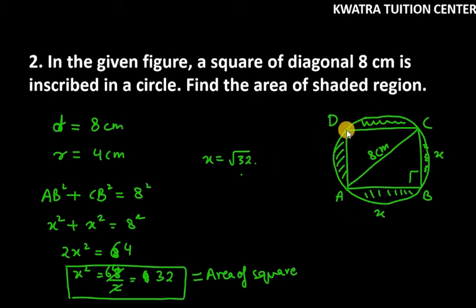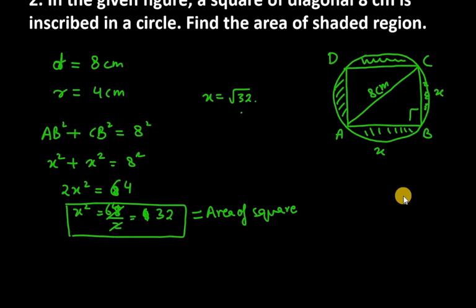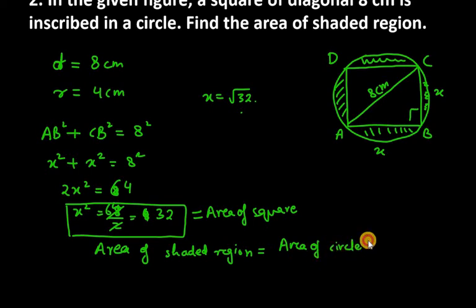Now we have to find area of shaded region. So what you need to do is find area of circle minus area of square. Let's find this. We have area of shaded region equals area of circle minus area of square. So area of circle is πr² minus area of square is 32.